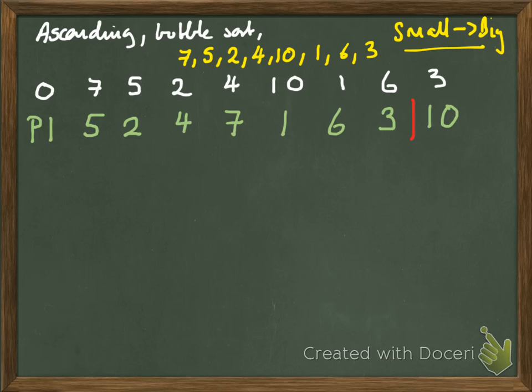Pass 2. Consider 5 and 2, swap. 5 and 4, swap. 5 and 7, no swap. 7 and 1, swap. 7 and 6, swap. 7 and 3, swap. 7 and 10 remains as it is. Did everybody notice there that I actually paused for a second and almost lost my way? Madness, isn't it?